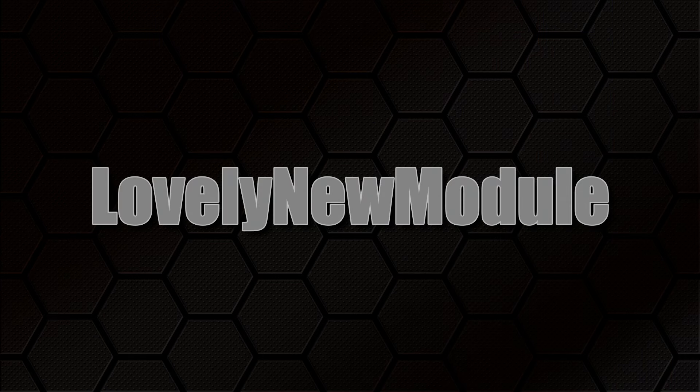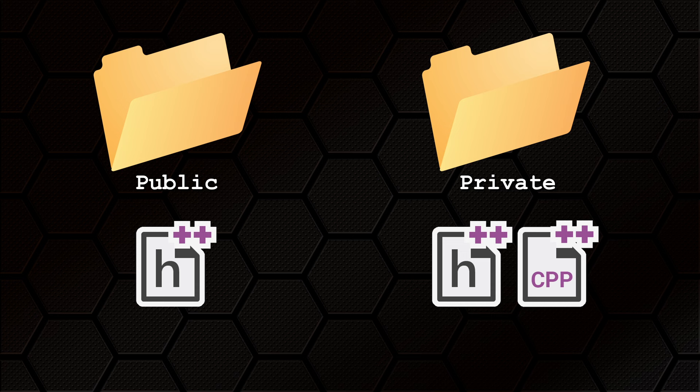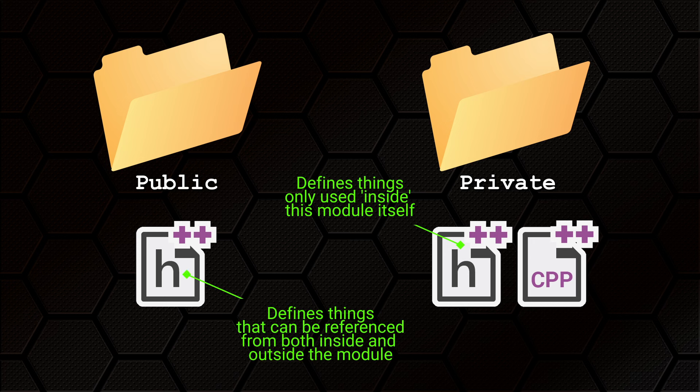Okay, so now you have your shiny new empty module — what are you gonna do with it? And what's the deal with the public and private folders? Your .cpp files go in the private folder — that's the implementation code which gets compiled to make the module do whatever it's going to do, and nothing else should ever need to reference those files directly, so they're private. Your header files will either go in the private or the public folders depending on how they are used. If they declare classes only used inside this module then they'll be in the private folder; if they are required to be exposed to modules outside of this module they go in the public folder.